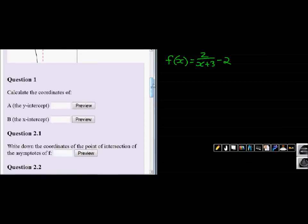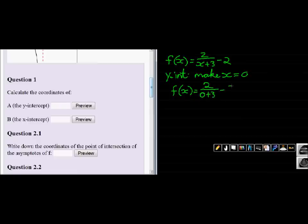For the y-intercept, we make x = 0. So f(x) = 2/(0+3) - 2, which gives us 2/3 - 2. This equals negative 1 and 1/3.